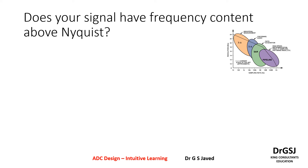Next, we will look at what is the nature of this frequency present, or the bandwidth of the frequency present in your signal. And in certain cases, there might be frequency content present over and above the Nyquist frequency. The Nyquist frequency is twice the maximum operating frequency needed for your application.